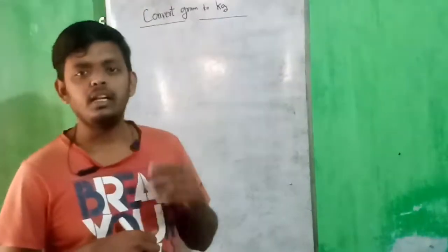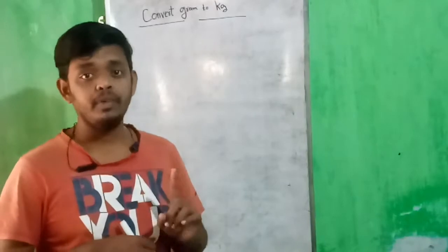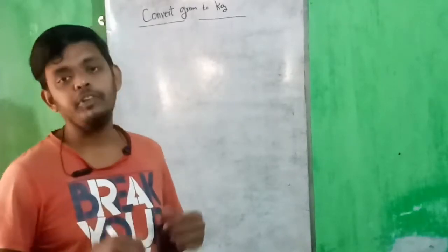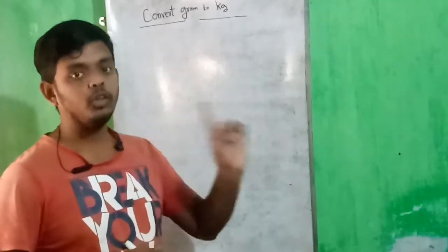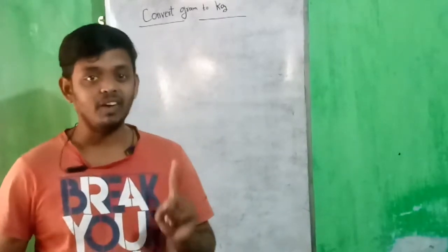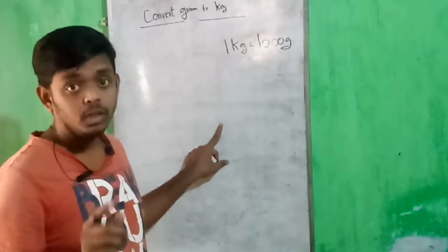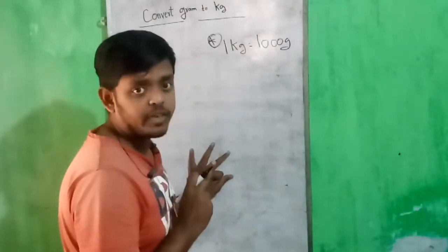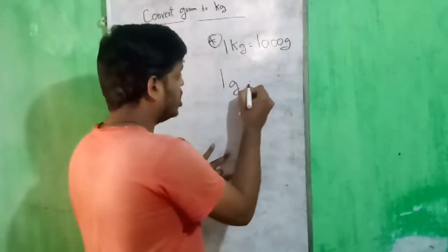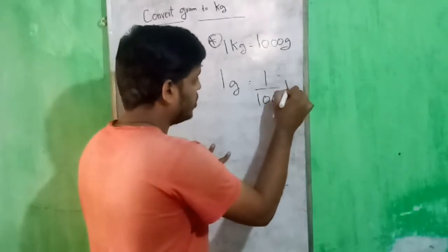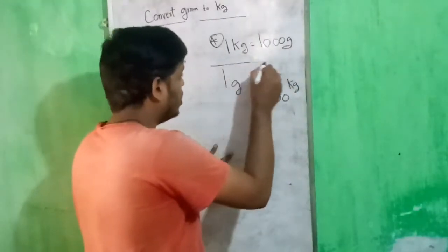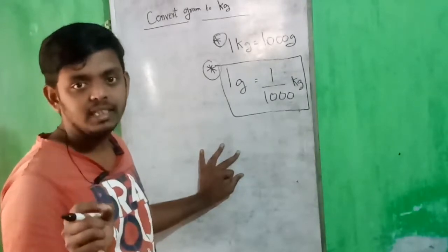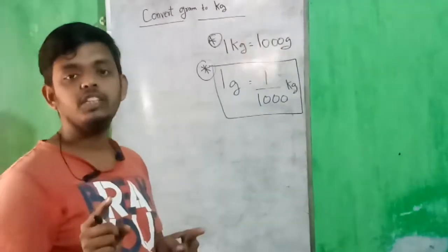Now we are going to discuss how to convert from gram to kg. Till now we learned how to convert from kg to gram. Now we learn the reverse. We know 1 kg equals 1000 grams. From this equation we can write 1 gram equals 1 divided by 1000 kg. Remember these two basic relations.